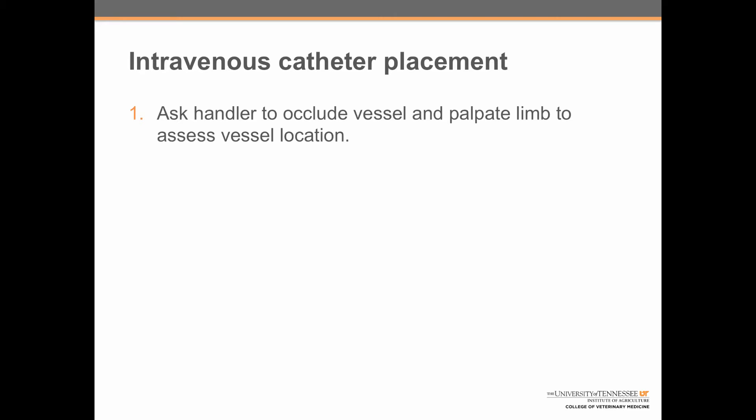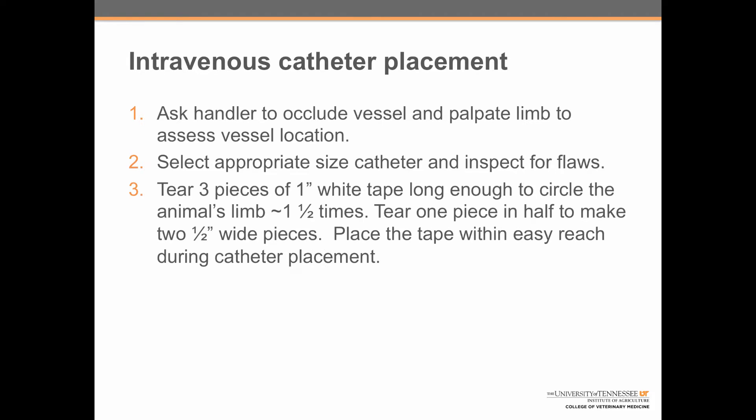There are 14 steps to intravenous catheter placement. Step 1: ask the handler to occlude the vessel and then palpate the limb to assess vessel location. Step 2: select an appropriate size catheter and inspect it for flaws. Step 3: tear three pieces of one-inch white tape long enough to circle the animal's limb one-and-a-half times. Tear one piece in half to make two one-half-inch wide pieces. Place the tape within easy reach during catheter placement.